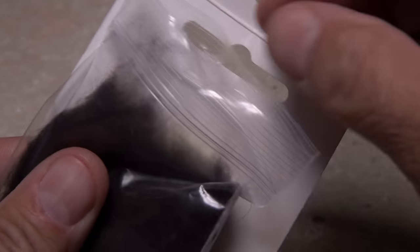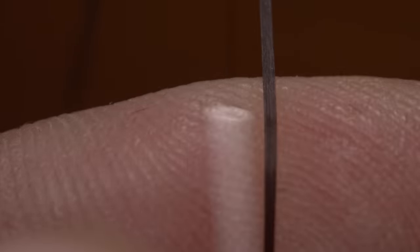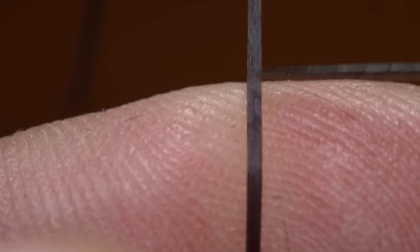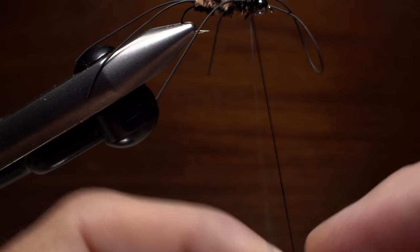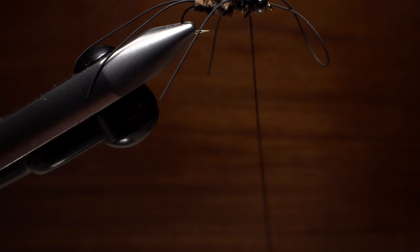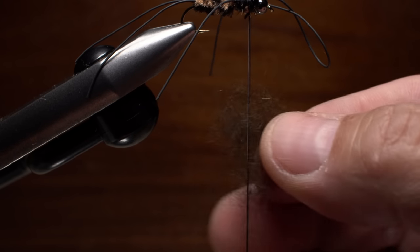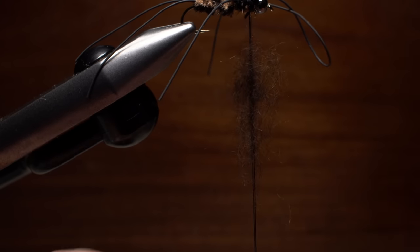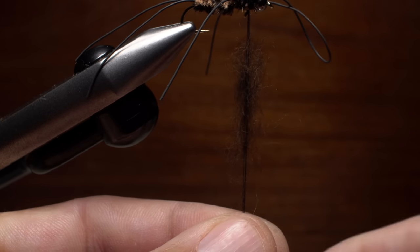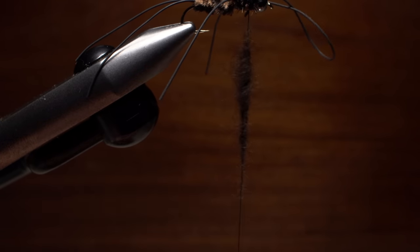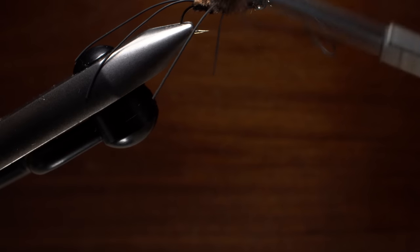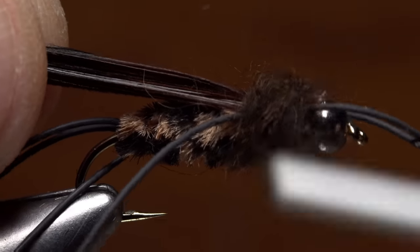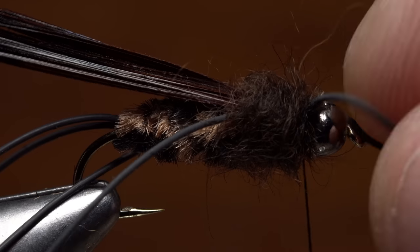Dark brown Australian possum dubbing is used for the thorax of the fly. Pull an ample clump free from the packet and set it aside for the time being. Give your bobbin a gentle counterclockwise spin to uncord and flatten the thread. You can then use a dubbing needle to split the flattened thread and insert the index finger of your left hand between the two strands. Pick up the clump of dubbing you set aside and slip it into the split thread. Remove your left index finger to sandwich the dubbing in place. Give your bobbin a real good clockwise spin to cord up the thread and spin the dubbing into a nice fuzzy tapered noodle. Start taking wraps with the noodle to build up a substantial thorax on the fly. End with your tying thread at the back edge of the bead.